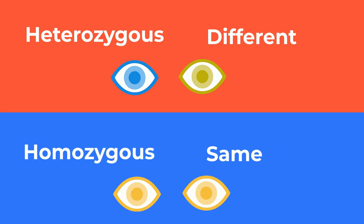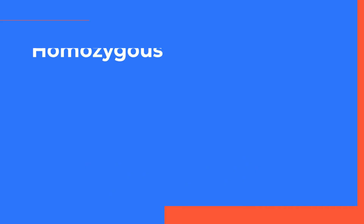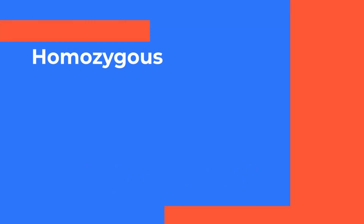To shorten this: think hetero equals different, homo equals the same. An organism is homozygous for a particular gene if it has two identical alleles for that gene.